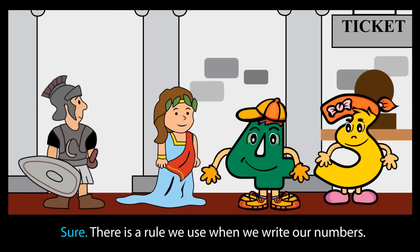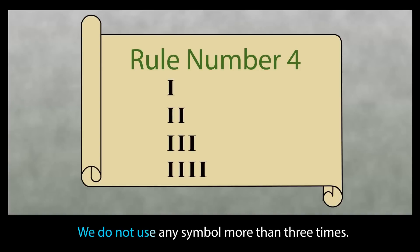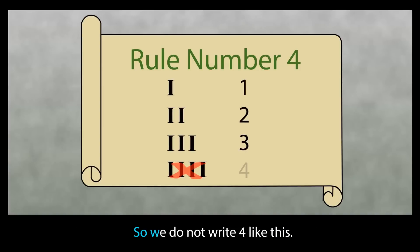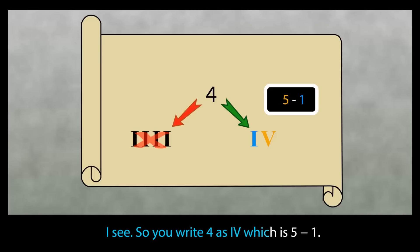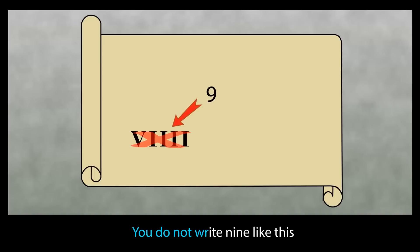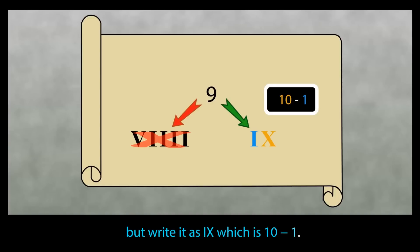Sure. There is a rule we use when we write our numbers. We do not use any symbol more than 3 times. So we do not write 4 like this. I see. So you write 4 as IV, which is 5 minus 1. You do not write 9 like this, but write it as IX, which is 10 minus 1.